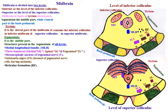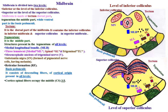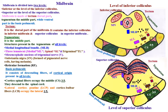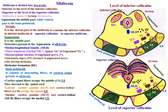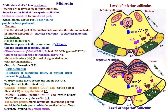Basis pedunculae, which is the ventral part of the midbrain, consists of descending fibers of cortical origin present in all levels. These are corticospinal fibers, occupying the middle three-fifths, which descend to the spinal cord. The lateral corticopontine and corticobulbar fibers occupy the lateral one-fifth. The medial corticopontine fibers terminate around the pontine nucleus in the basis pontis, while the corticobulbar fibers terminate around the cranial nuclei.